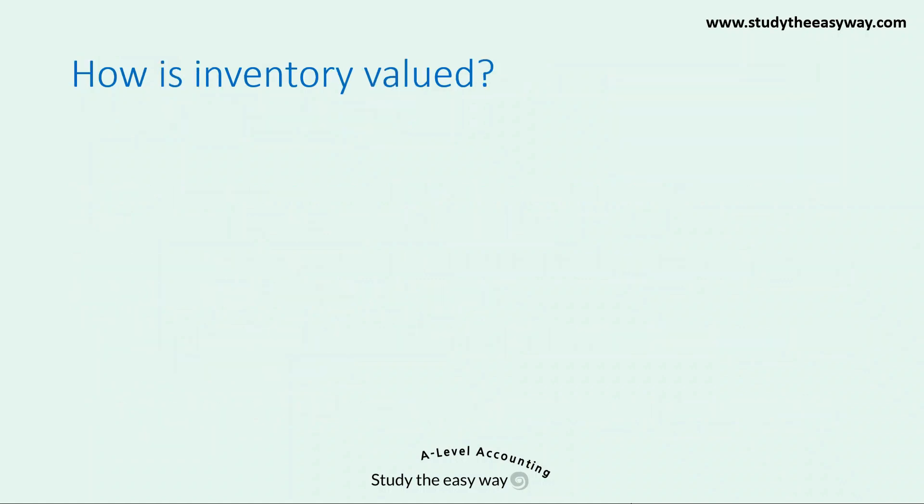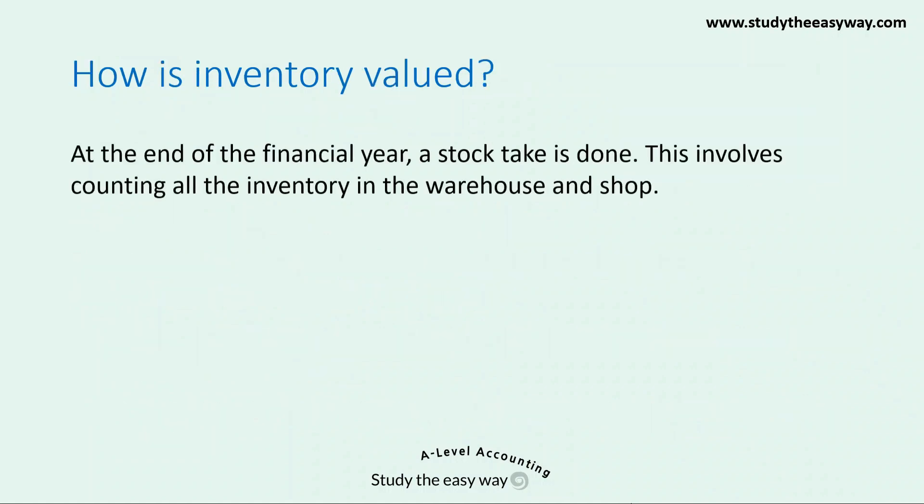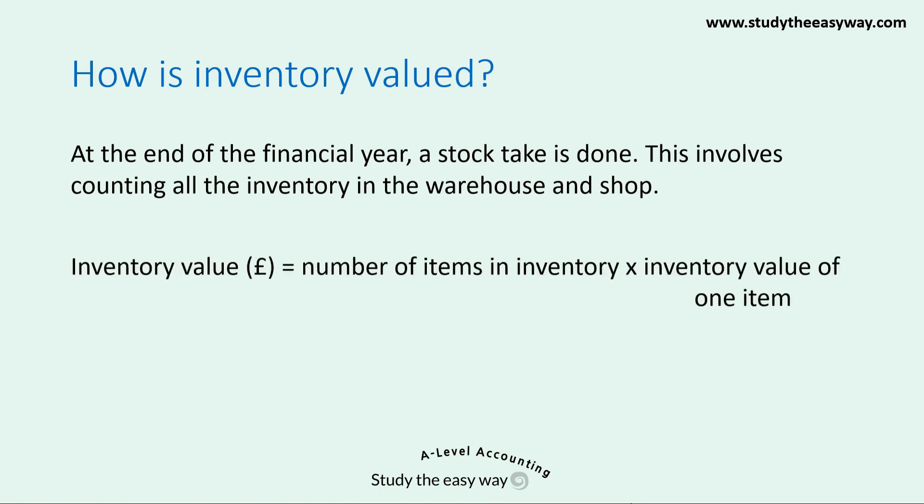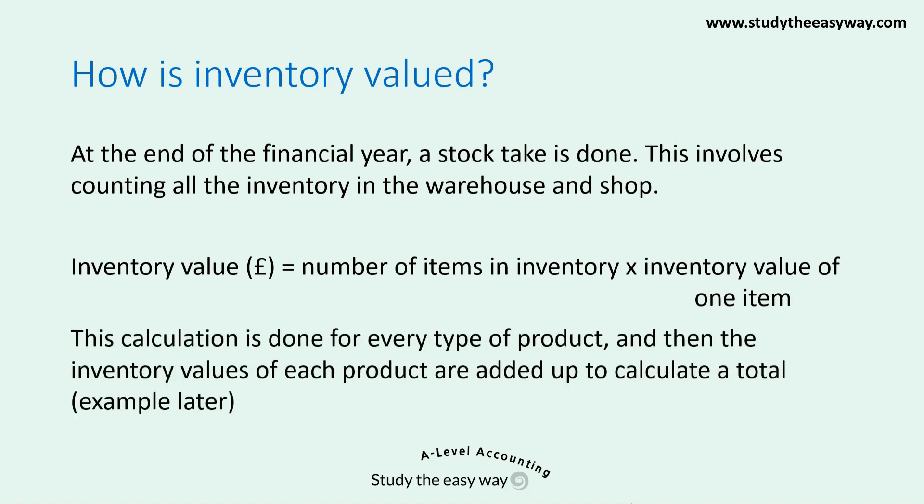How is inventory valued? At the end of the financial year, a stock take is done. This involves counting all the inventory in the warehouse and the shop. The total inventory, in pounds, is calculated by multiplying the number of items in inventory by the inventory value of one item. This calculation is done for every type of product, and then the inventory values of each product are added up to calculate a total. We'll have a look at an example later in the video.